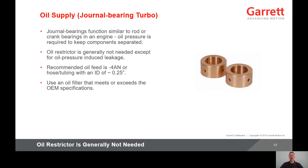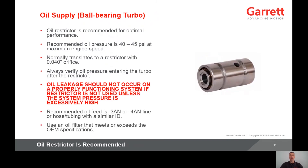You should always use an oil filter that meets or exceeds the OEM specifications. The oil supply for a ball bearing turbo is slightly different than a journal bearing. An oil restrictor is recommended for optimal performance. The recommended oil pressure at maximum engine speed should be between 40 and 45 psi. This normally equates to a restrictor with an orifice of 40 thousandths of an inch. However, you should always verify oil pressure entering the turbo after the restrictor.